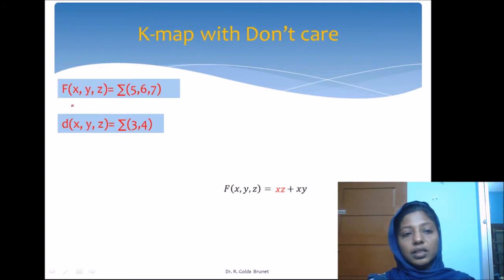Consider an example. The Boolean function f is defined as 1 for minterms 5, 6, 7, and the don't cares are 3 and 4. What are these don't cares? These combinations of input might not appear in the application at all.